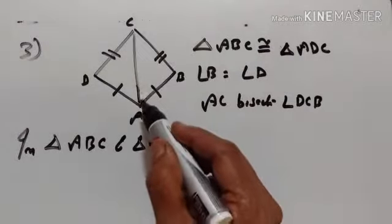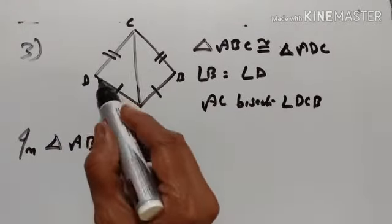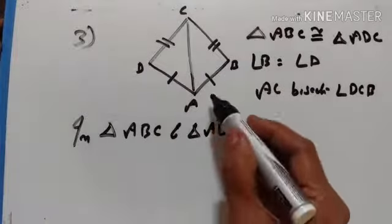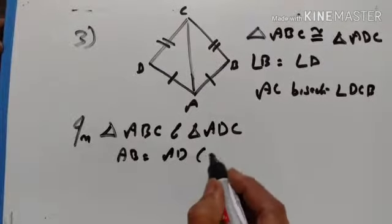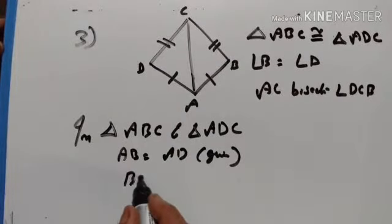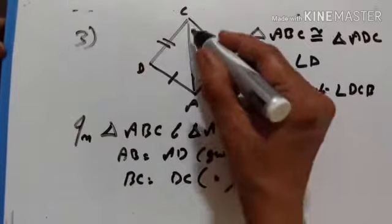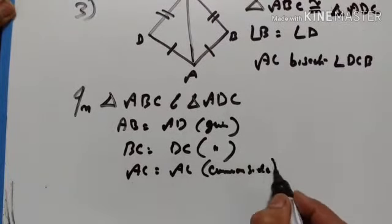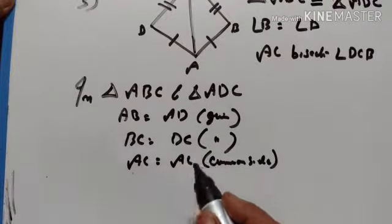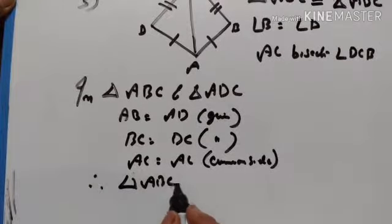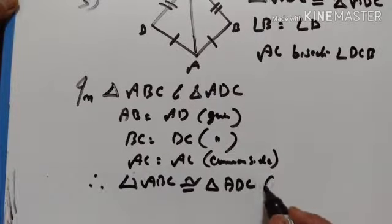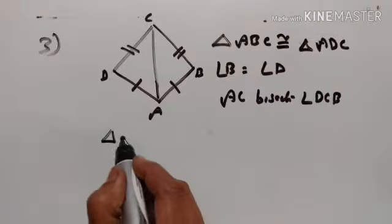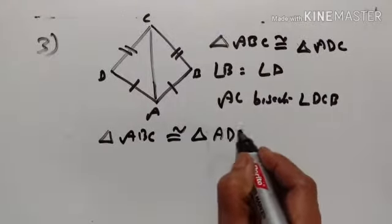Here we have to prove that triangle ABC is congruent to triangle ADC, given that angle B is equal to angle D and AC bisects angle DCB. In triangle ABC and triangle ADC: AB is equal to AD (given), BC is equal to DC (given), and AC is common to both triangles, so AC is equal to AC. Since three sides of one triangle are equal to three sides of another triangle, triangle ABC is congruent to triangle ADC by the SSS postulate.